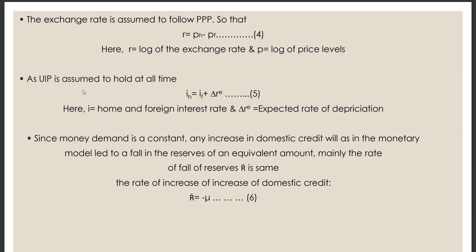As we have assumed that money demand is constant, so any increase in domestic credit will, as in the monetary model, lead to a fall in the reserves of an equivalent amount. Mainly the rate of fall of reserves indicated by RD is same. So the rate of increase of domestic credit is equal to R dot is equal to minus mu, which is indicated by equation six.